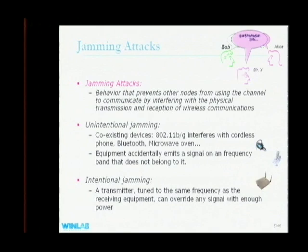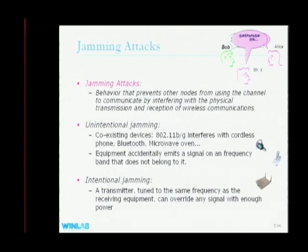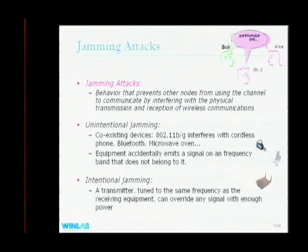For instance, you may already suffer from device coexistence problems. 802.11 B/G, cordless phones, Bluetooth, and even microwave ovens all overlap in the 2.4 GHz frequency band. Sometimes a device can accidentally use a frequency band that doesn't belong to it — this can happen in cognitive radio scenarios. The point is that unintentional interference causes the same damage as intentional adversarial jamming. In this thesis, I look at both cases.